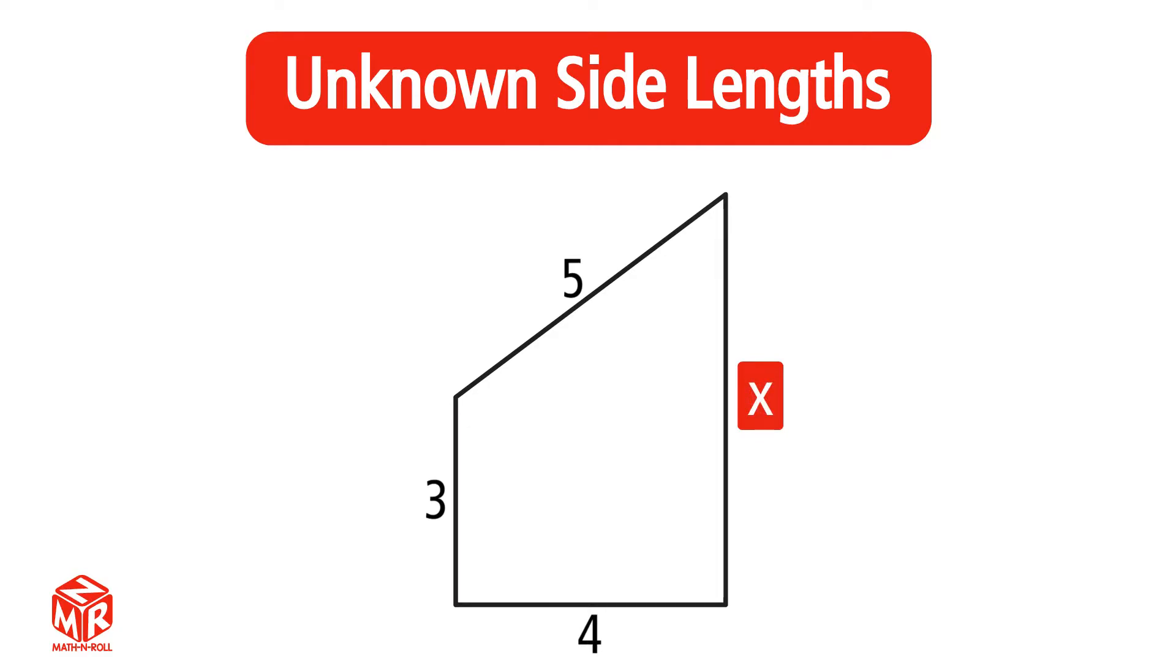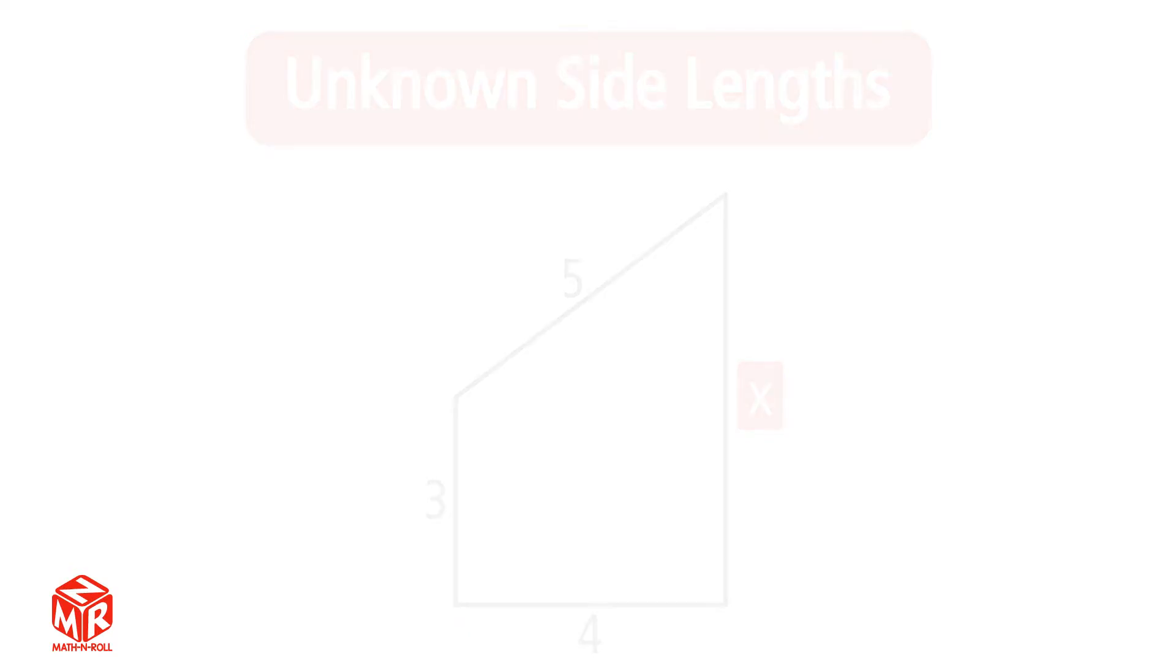How do we find the unknown side length of a shape using its perimeter? Let's take a look at an example.